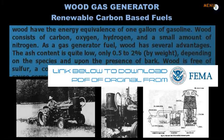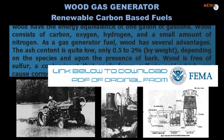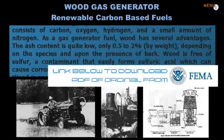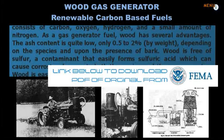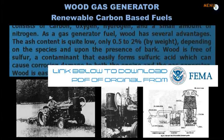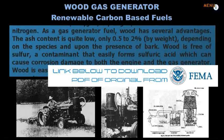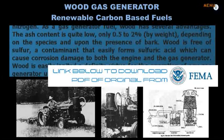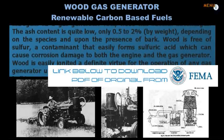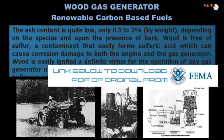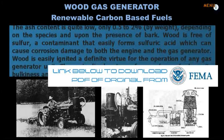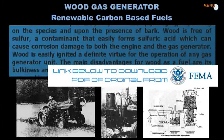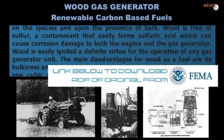As a gas generator fuel, wood has several advantages. The ash content is quite low, only 0.5 to 2% by weight, depending on the species and upon the presence of bark. Wood is free of sulfur, a contaminant that easily forms sulfuric acid, which can cause corrosion damage to both the engine and the gas generator.